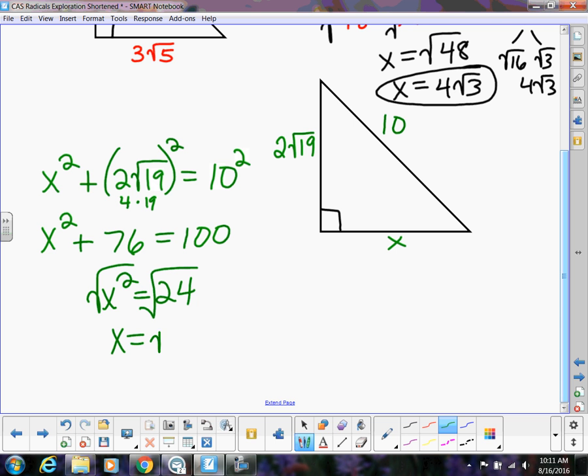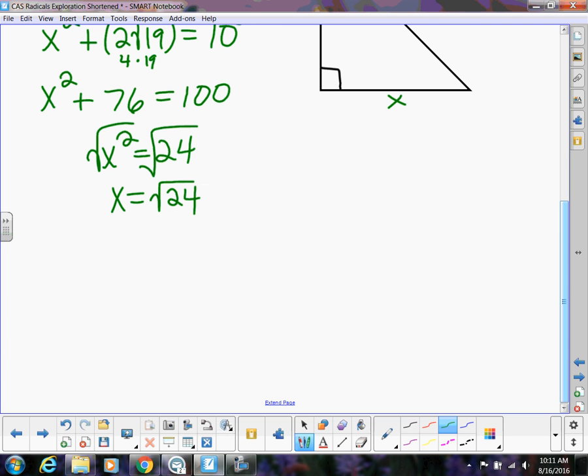And then now when I take the square root, again don't leave this as the square root of 24 and don't give me a decimal. Instead, simplify it like we were just talking about. So break that down. I think 4 is the highest, so that's going to be 2 times the square root of 6. That would be our leg.